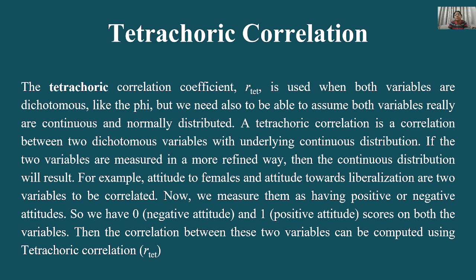If the two variables are measured in a more refined way, then the continuous distribution will result. For example, attitude towards females and attitude towards liberalization are two variables to be correlated. दोनों ही variables dichotomous हैं — हम measure करेंगे कि positive attitude है या negative। Negative attitude को 0 अंक देंगे और positive attitude को 1, on both variables।